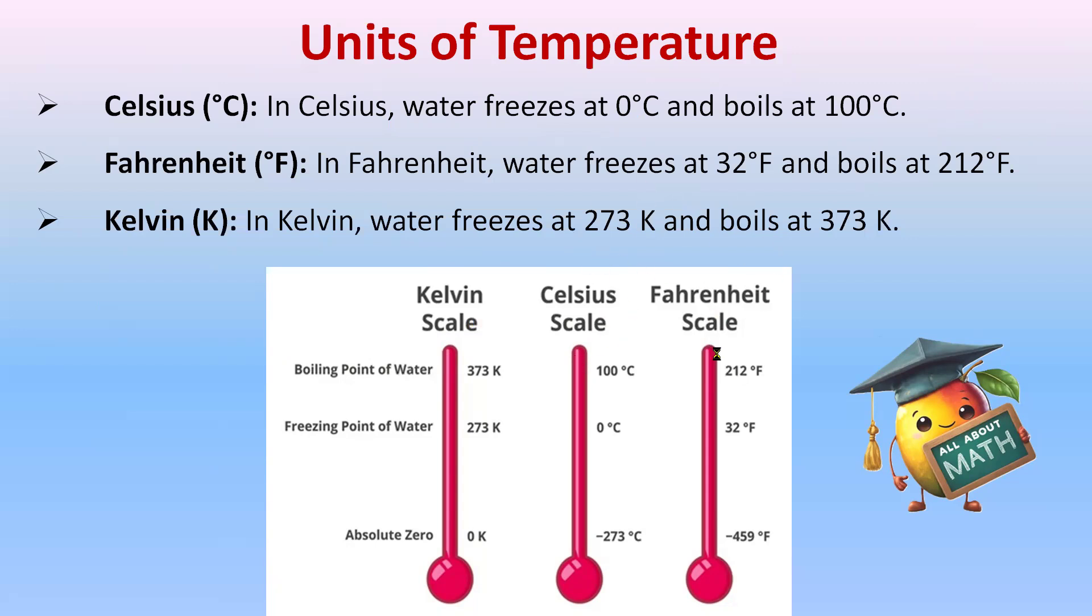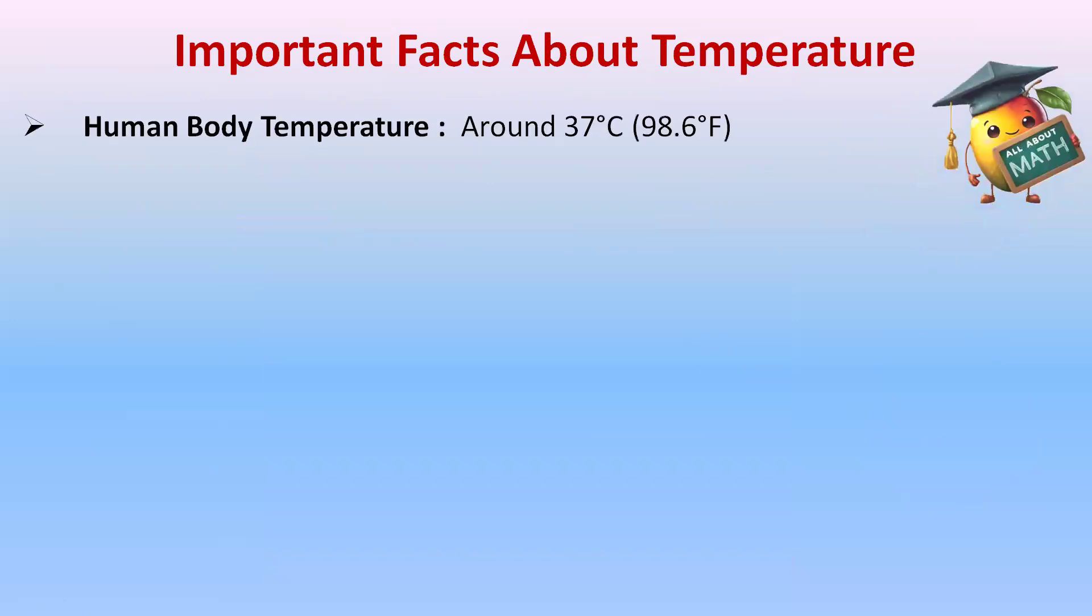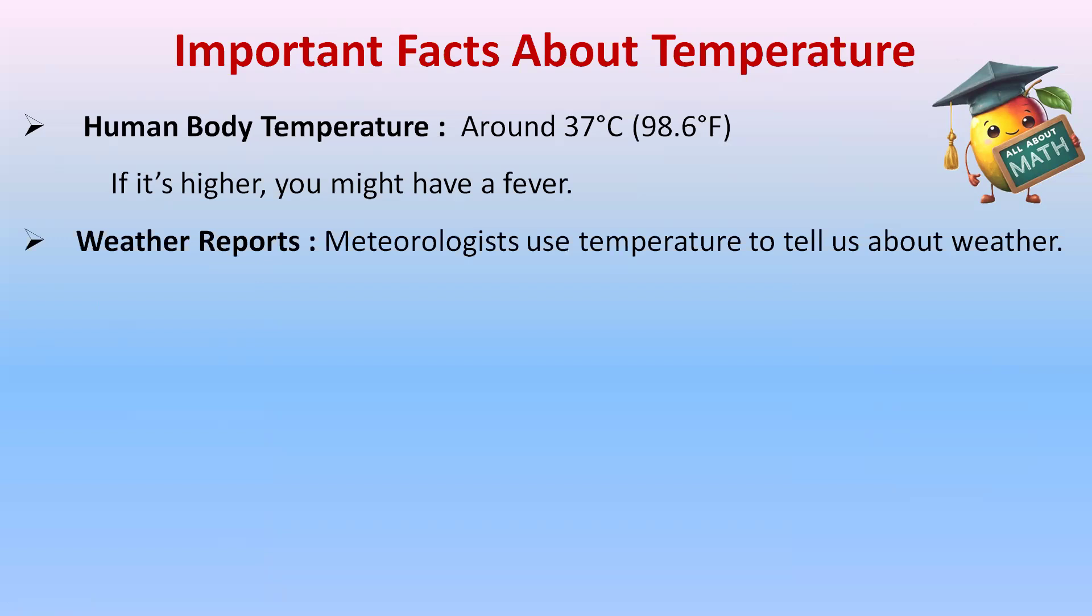Important facts about temperature. Human body temperature is around 37 degrees Celsius or 98.6 degrees Fahrenheit. If it's higher, you might have a fever. Weather reports: meteorologists use temperature to tell us about weather.